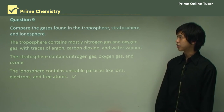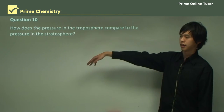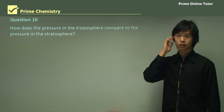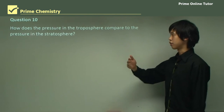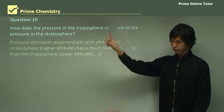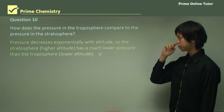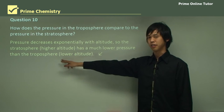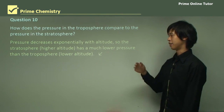Question ten asks how the pressure in the troposphere compares to the pressure in the stratosphere. Since pressure decreases exponentially with altitude, and the stratosphere is at a higher altitude than the troposphere, the stratosphere has a much lower pressure. The graph showed a very steep decline as altitude increased, so the stratosphere's pressure is significantly less than the troposphere's.